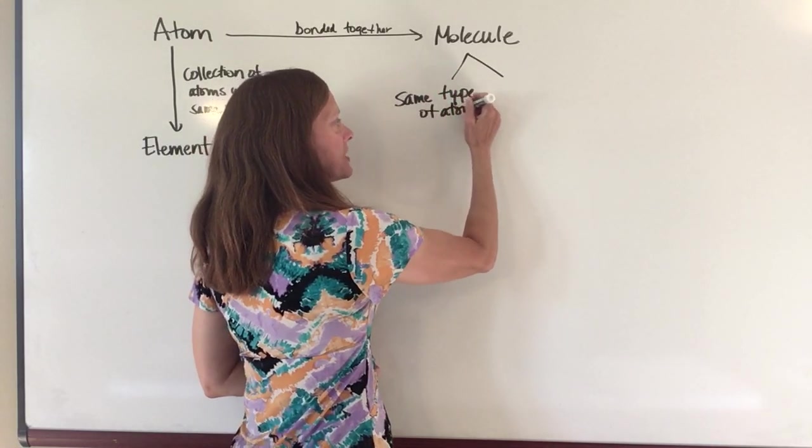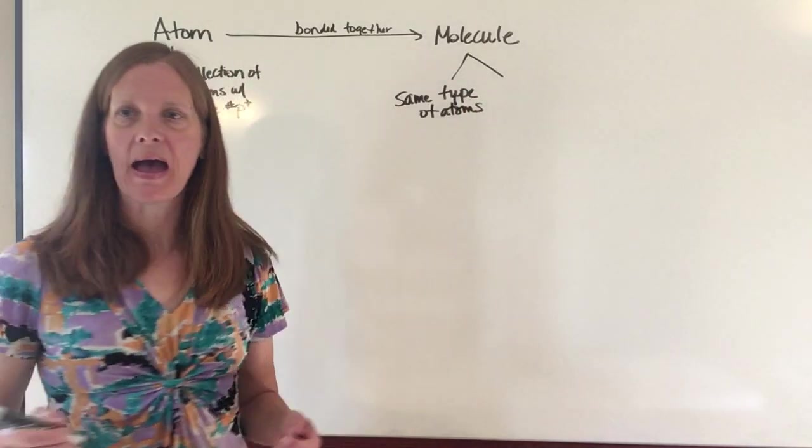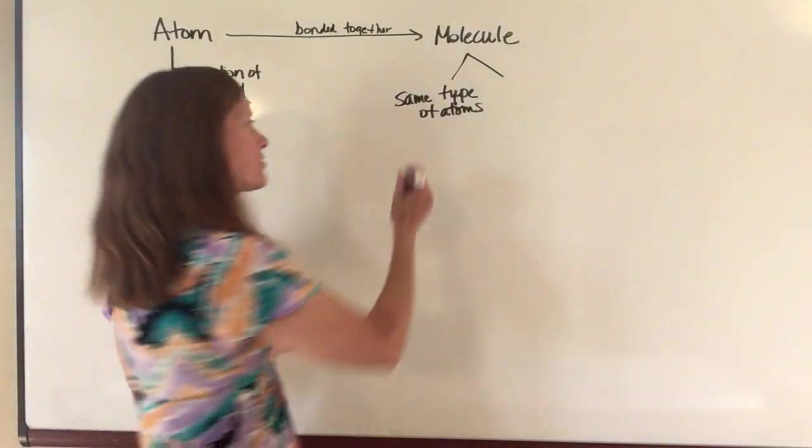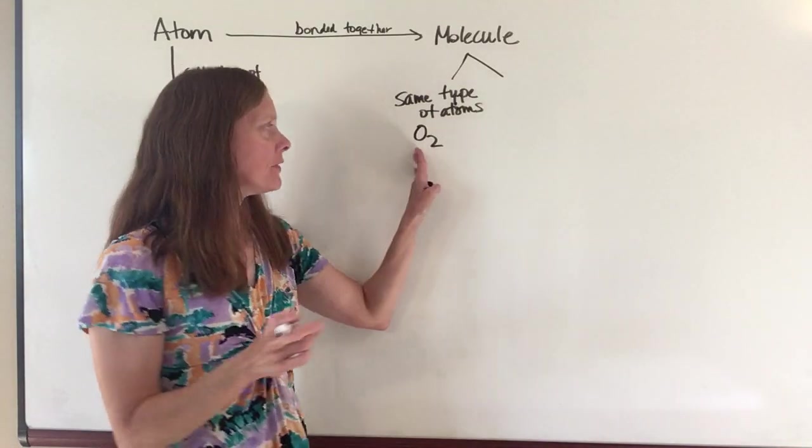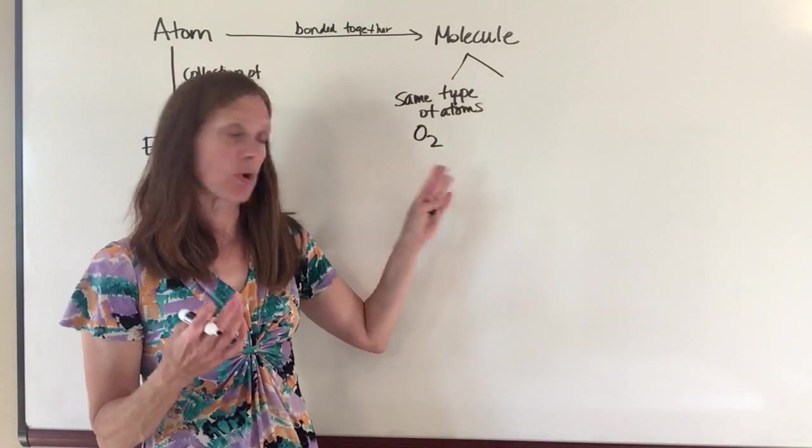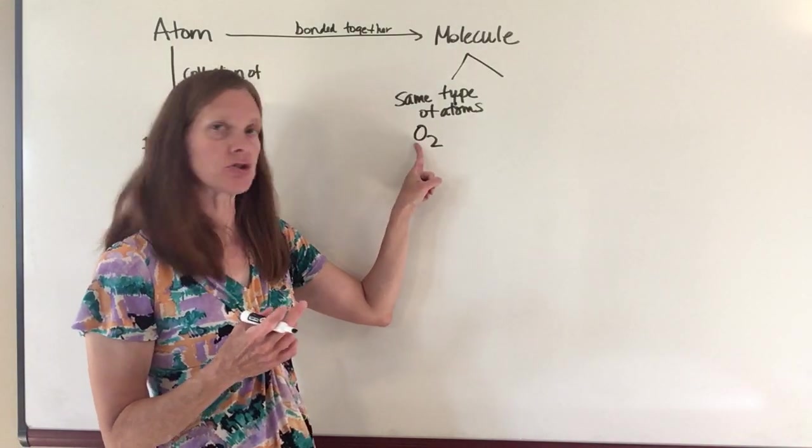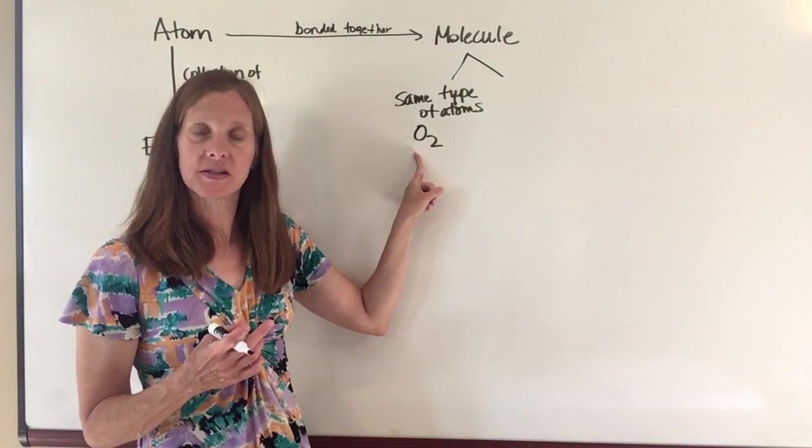So for example, if I have two oxygen atoms that are stuck together, that are bonded together, that is O2 and that's how I represent that to say that I have two oxygen atoms that are bonded together.